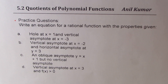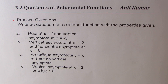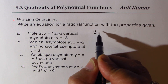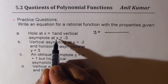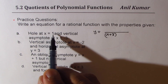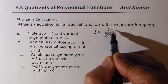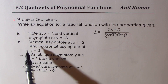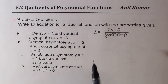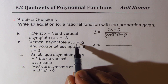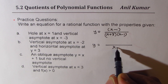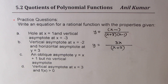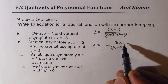Let's review all four questions. For Part A — hole at x equals 1 and vertical asymptote at x equals -3 — the denominator has x plus 3, and since there's a hole, x minus 1 is a common factor in both numerator and denominator. For Part B — vertical asymptote at x equals -2 and horizontal asymptote at y equals 3 — the factor x plus 2 is in the denominator, and we multiply by 3, so the numerator could be 3x, 3x plus 1, etc.